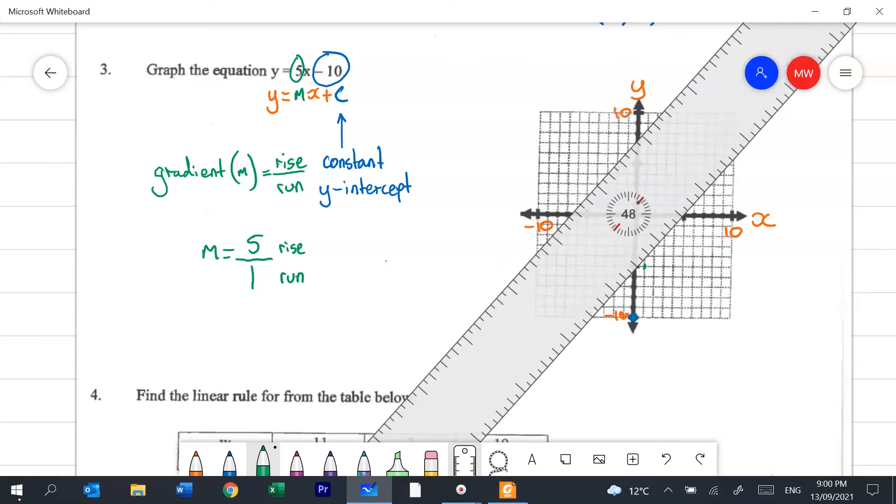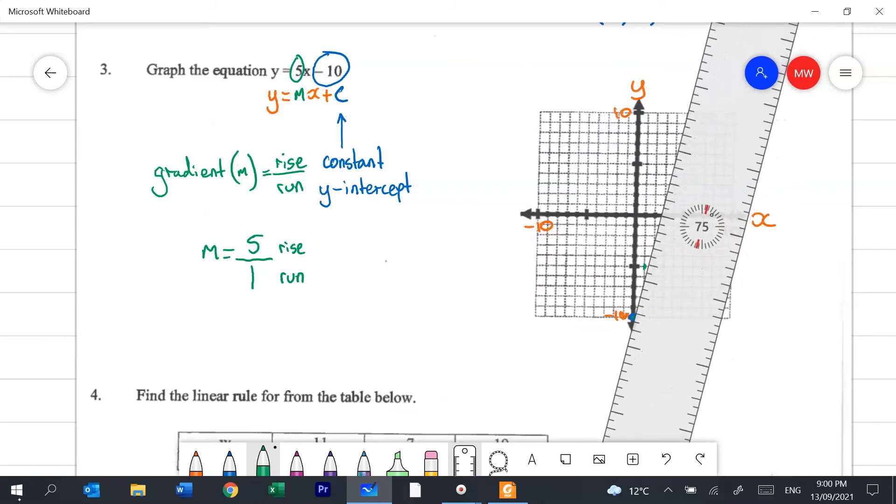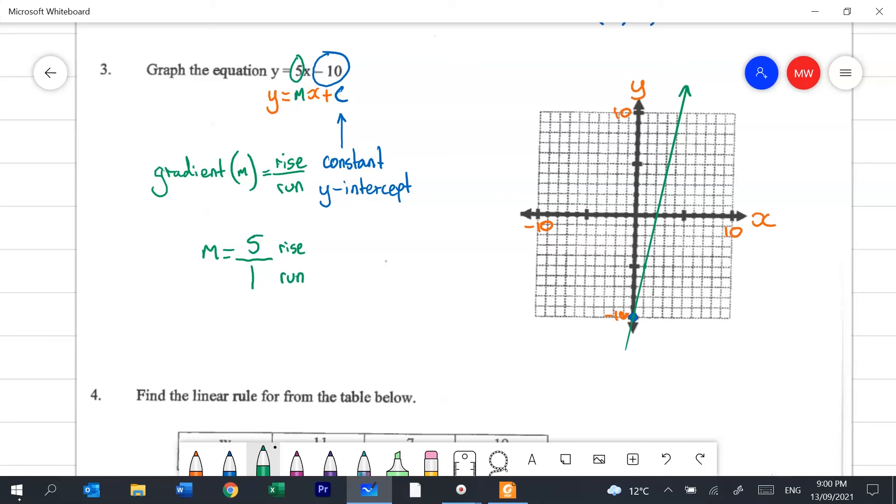So we just grab our ruler and we put those two dots together, and then we're going to go up 5, put an arrow on each end of the line because they go on forever, and you've just plotted your first linear equation.